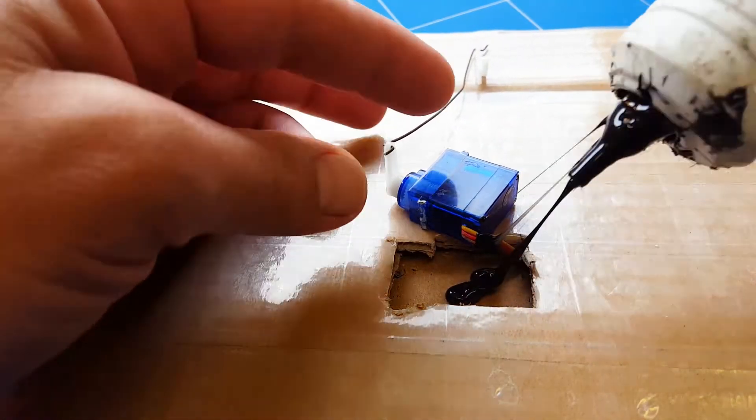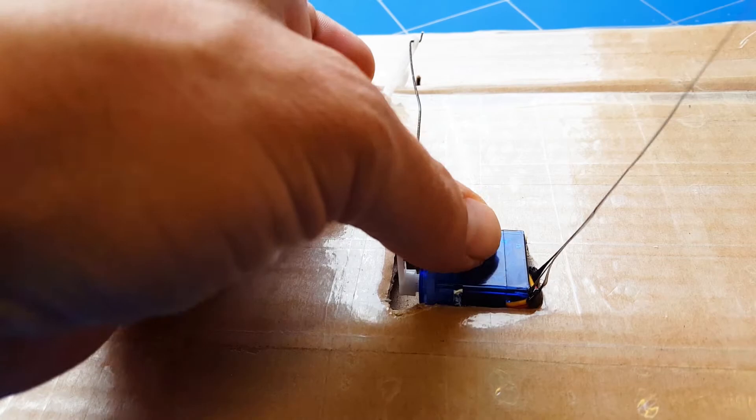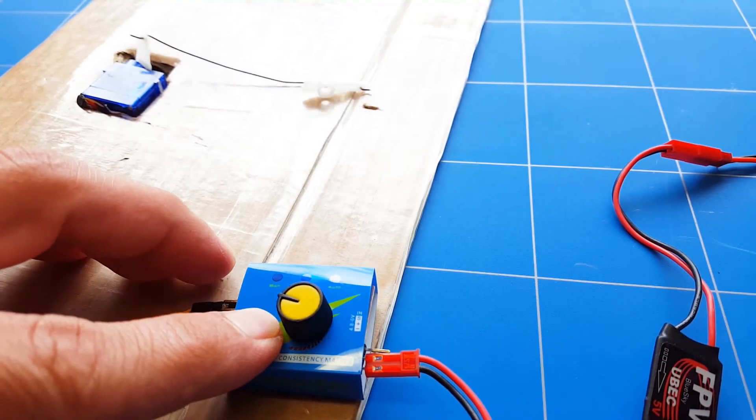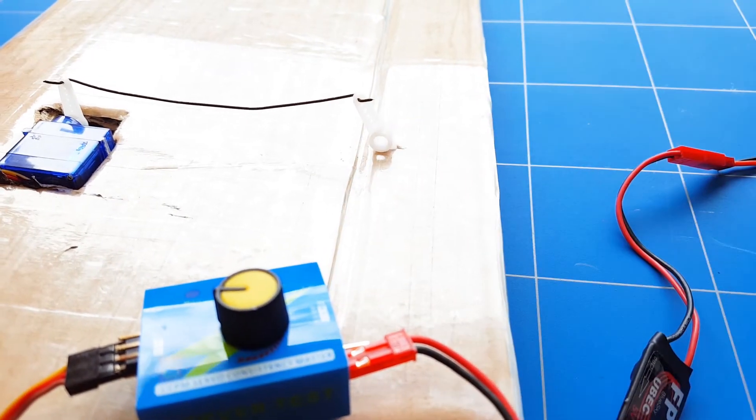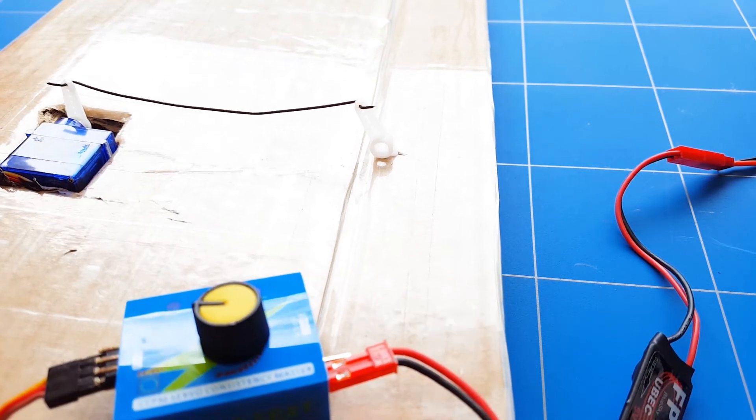Finally, hot glue down the servo. Hold the servo in place for a couple of seconds and then make sure before you're going to glue down the aileron horn that your servo is centered.